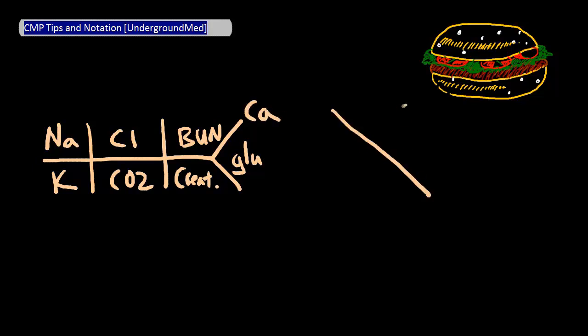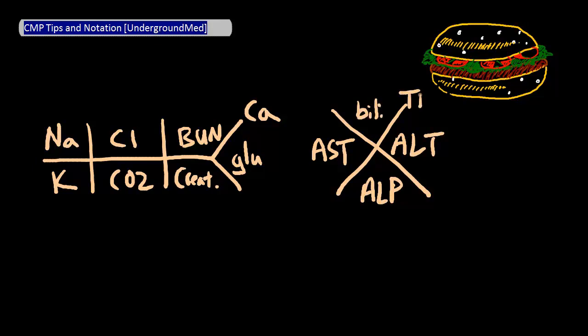As for the LFT portion, remember that AST goes here, ALT goes here, ALP goes here, bilirubin goes here, total protein goes here, and albumin goes here.